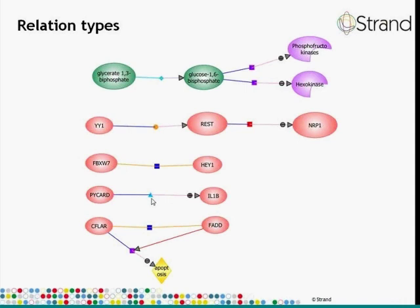A blue triangle indicates a transport interaction, saying that PICARD plays a role in the transport of IL1B. Finally, we have a slightly more complex interaction. If you focus on the purple rectangle — which is a regulation — it says that CFLAR inhibits apoptosis. But this interaction has a third entity, FADD, which is a modulator of this interaction. So essentially FADD modulates the inhibition of apoptosis by CFLAR, and the manner in which it carries out that modulation is explained by the first link, which indicates that FADD binds CFLAR.